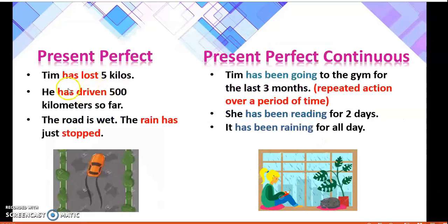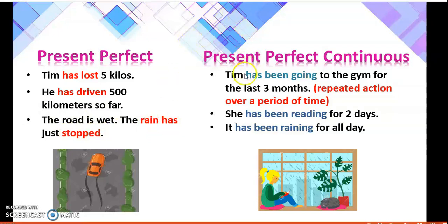'Tom has lost 50 kilos' — this is a result. 'He has driven 500 kilometers so far' — he has completed his task. 'The road is wet — the rain has just stopped' — the action of rain has been stopped, so we use 'has' to make it present perfect tense. For present perfect continuous: 'Tom has been going to the gym for the last three months' — repeated action over a period of time. 'She has been reading for two days.' 'It has been raining all day.'